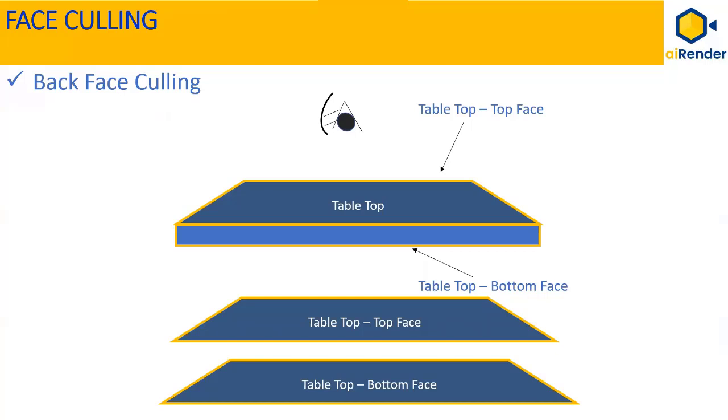Let's now take you through the sphere of face culling. The most popular face culling method is back face culling. Consider the table top that we had seen in the prior classes. If the viewer or the camera is seeing the table top from the top view, the top face of the table top is visible and the bottom face of the table top is not seen by the viewer.